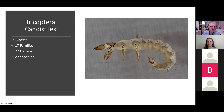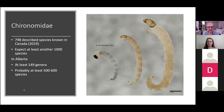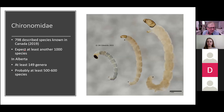So with 277 species, we're getting close to half the known caddisfly fauna for the country occurring in Alberta. The only province with more is BC — though I think we should argue to be number one and try to find more records, and I suspect we will fairly quickly. The final group to focus on is chironomids — non-biting midges. There are 798 described species known from Canada as of 2019, and they expected at least another thousand — more than doubling the known fauna — again based on barcoding and a lack of taxonomic work on the morphology.